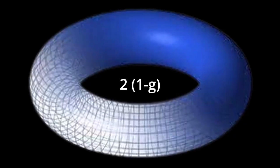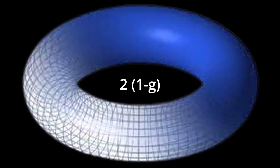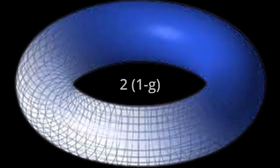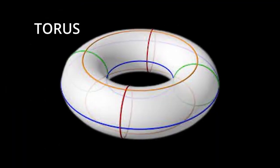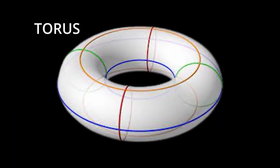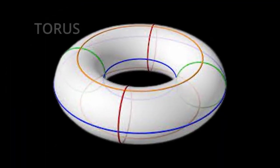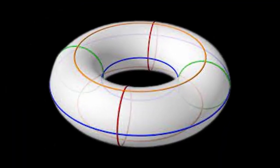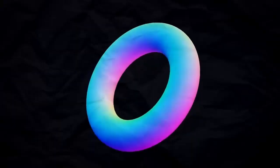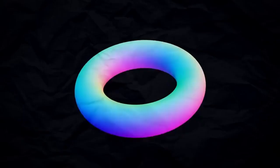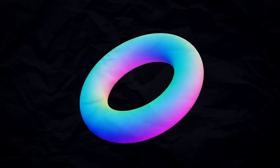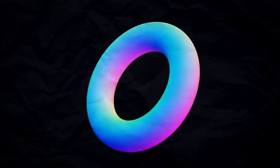A g-hole toroid's Euler characteristic is 2 into 1 minus g. The torus is an example of a toroid, which is the surface of a donut. Donuts are a type of solid torus formed by rotating a disk, and should not be confused with toroids.